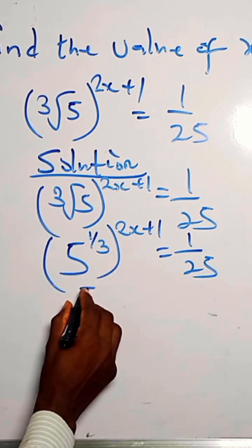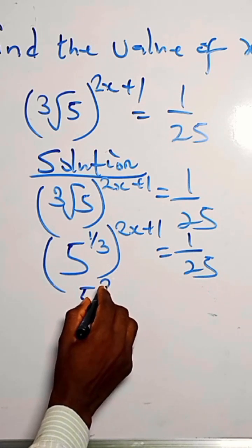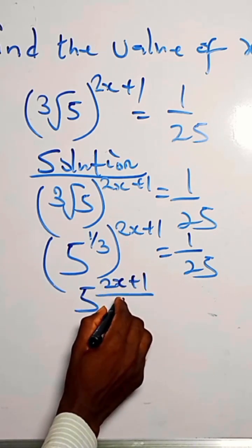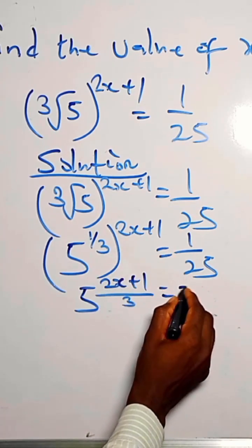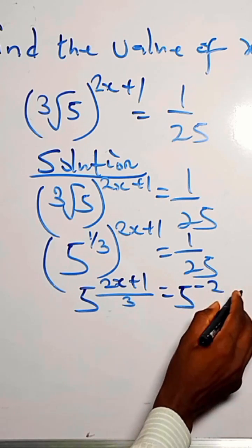When we apply the exponent law, we have 5 raised to the power 2x plus 1 divided by 3. We multiply this. And for this, we have 5 raised to the power minus 2.